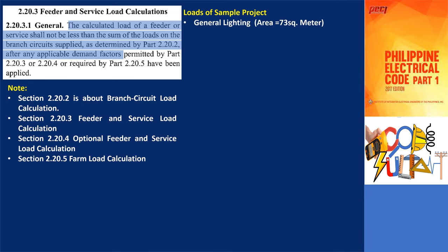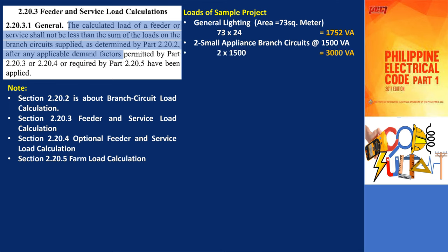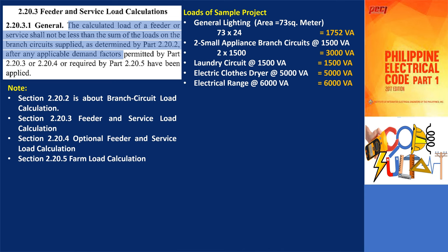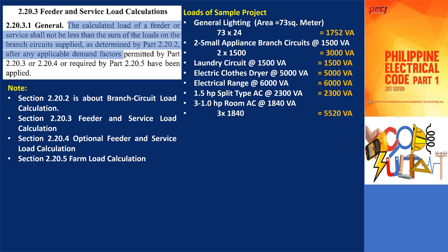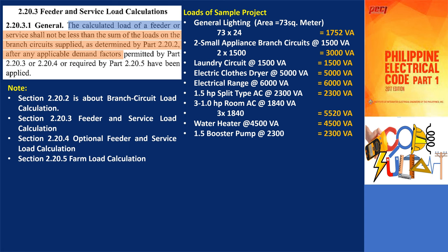Here are the loads of our sample project. For general lighting, we have 1,752 volt amperes, which includes receptacle outlets in general areas, bathroom circuits, garage circuits, and lighting loads. There are two 20-ampere small appliance branch circuits at 1,500 volt amperes each. Laundry circuits at 1,500 volt amperes. Electric clothes dryer at 5,000 volt amperes. Electrical cooking range at 6,000 volt amperes. 1.5 horsepower split type air conditioning unit, 3 1.0 horsepower room air conditioning units, 1 4.5 kW storage water heater, and 1.5 horsepower booster pump. The rules shall not be less than the sum of all loads after applying demand factors.